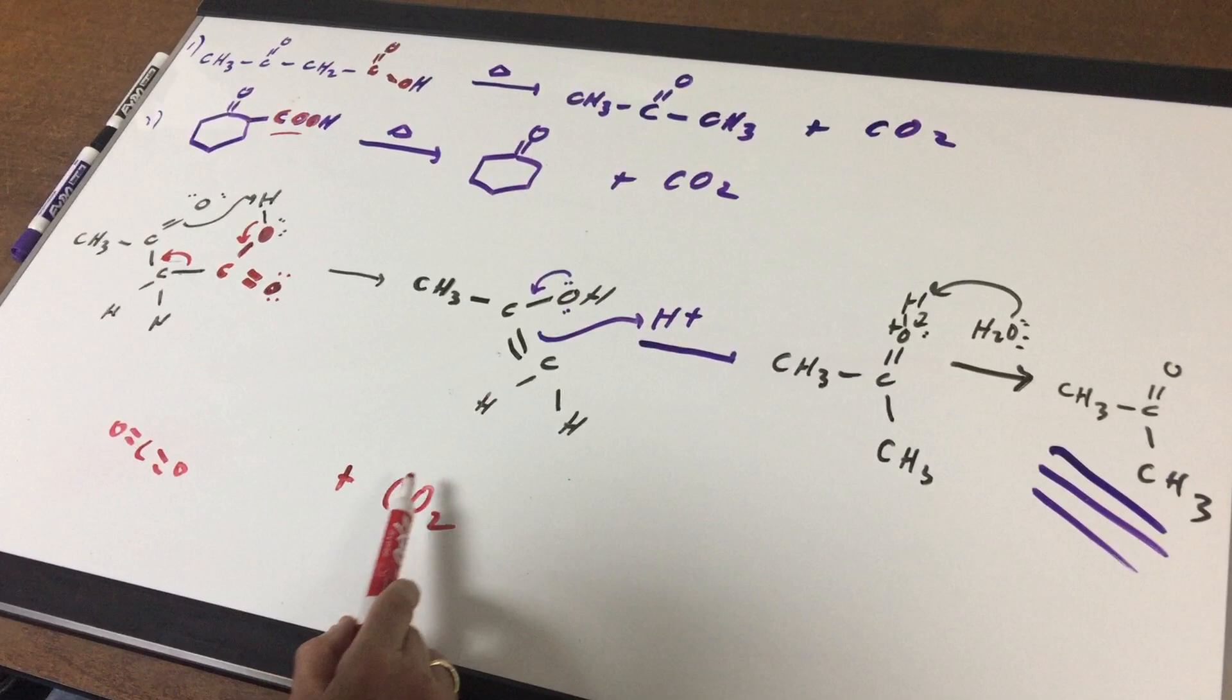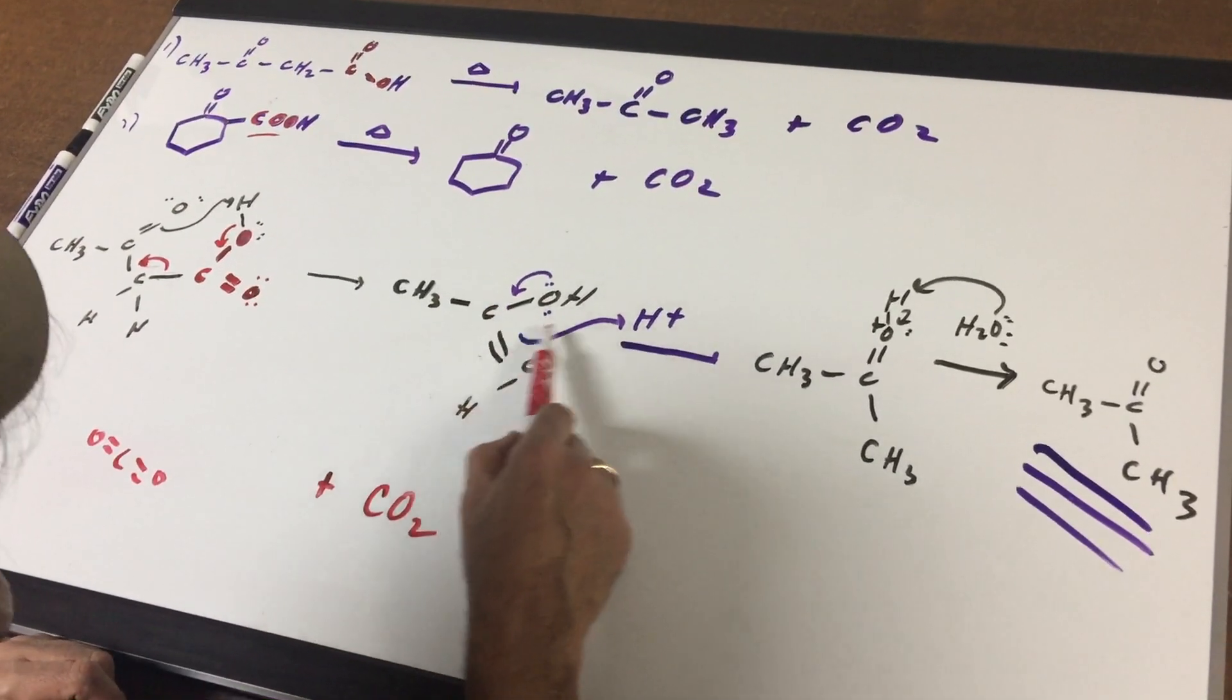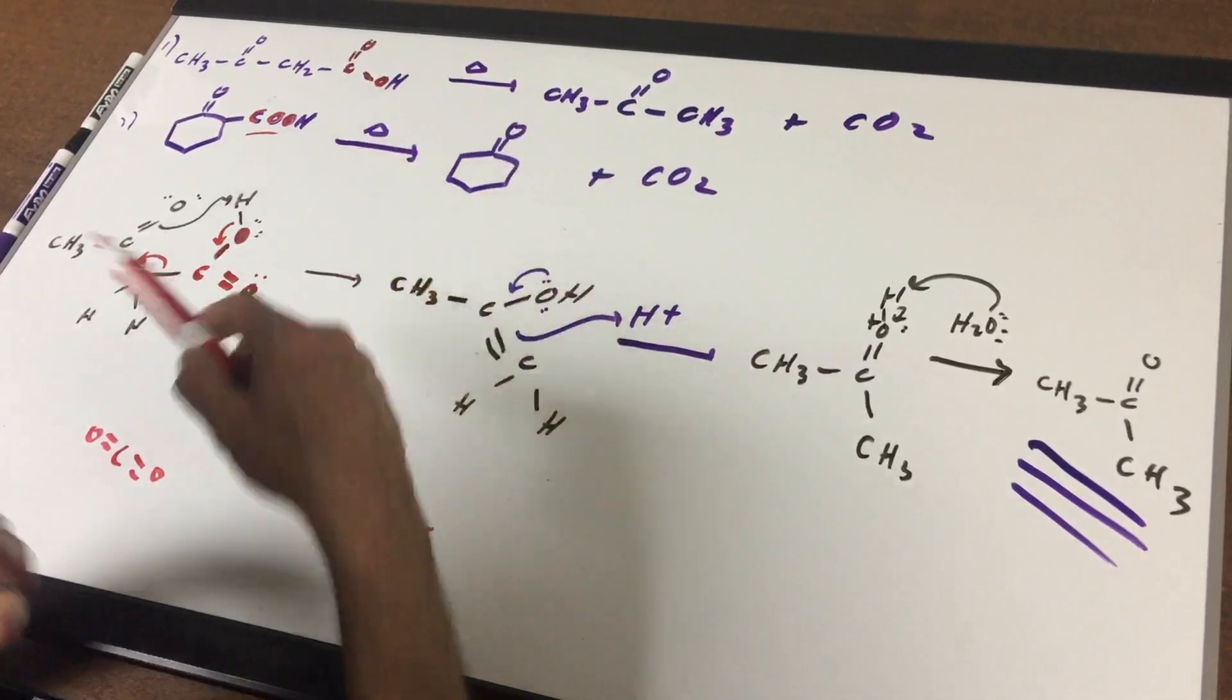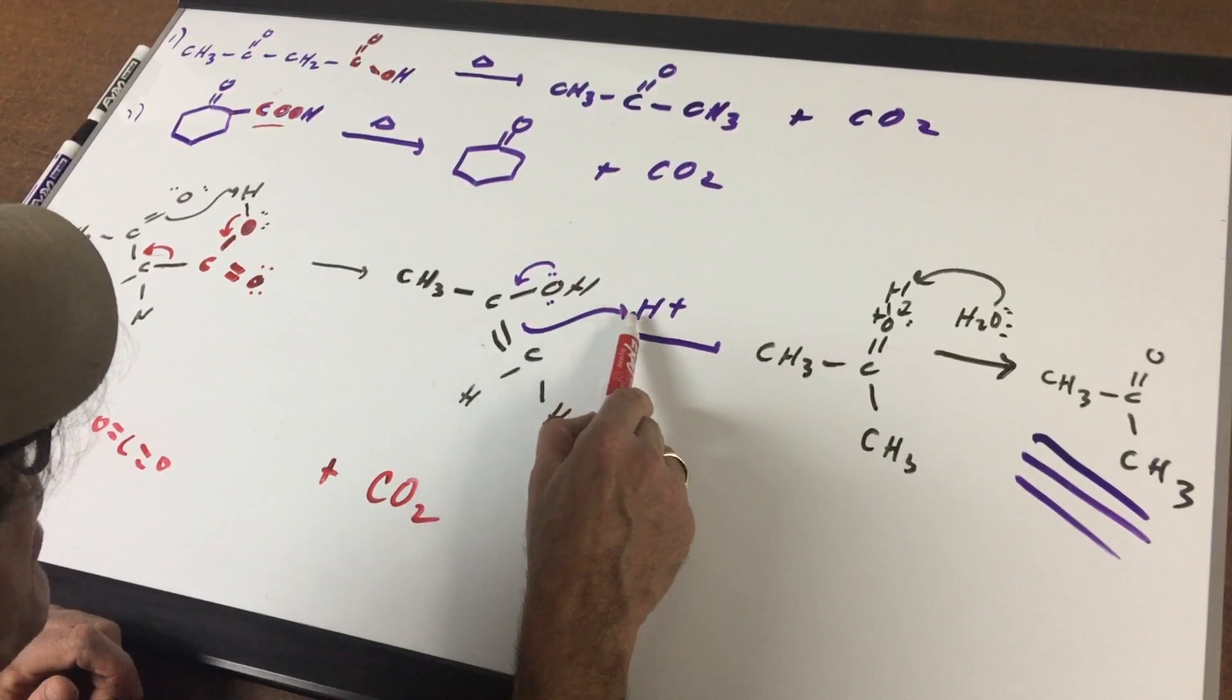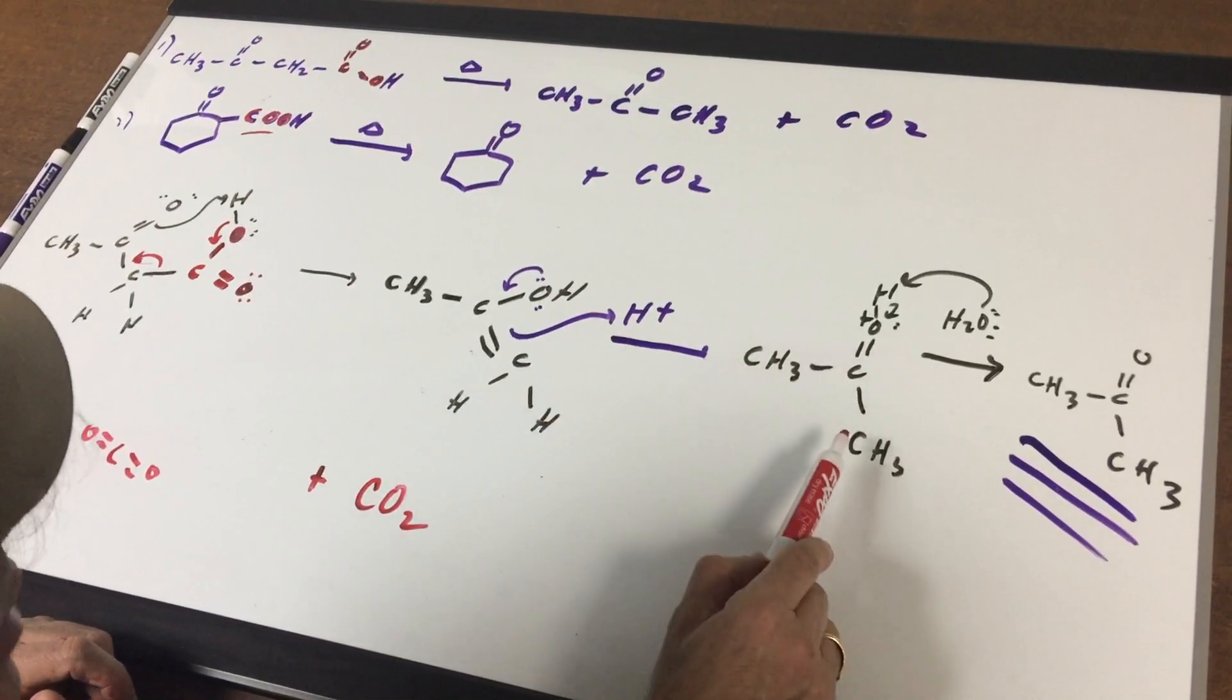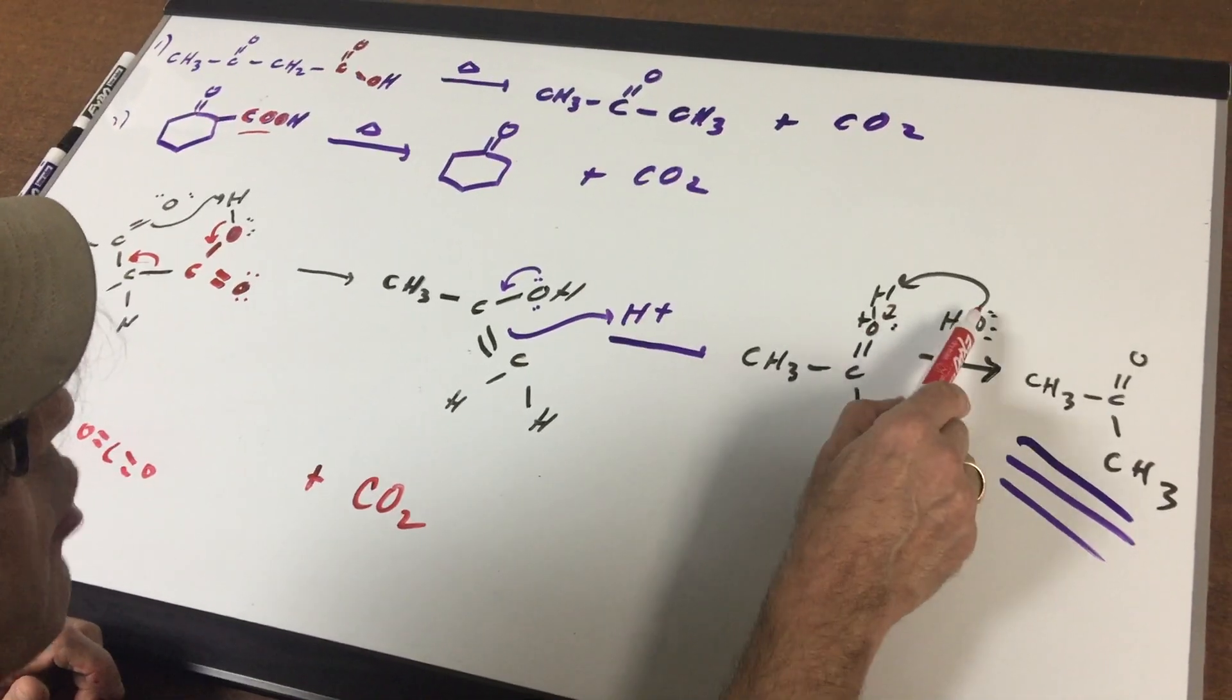The enol is then going to be captured. Sometimes we don't put the acid step, but this is called a workup step. So all you're gonna do is you're gonna pick up an H+, and that will give a CH3 here, the bond moves down, and then all you would simply do is just simply deprotonate it.